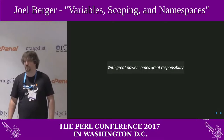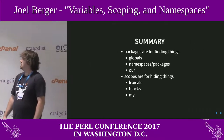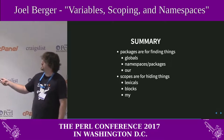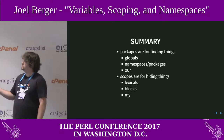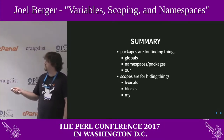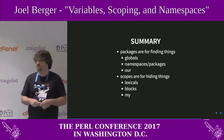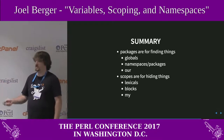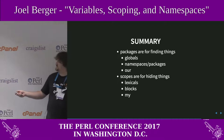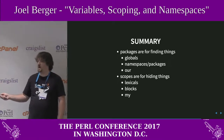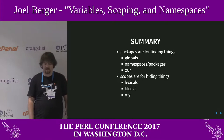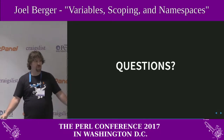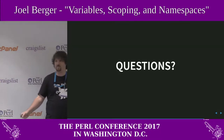So in summary: packages are for finding things. Packages set global variables — we can control them with namespaces and the `package` keyword, and refer to them with `our`, which builds a lexical alias, or the fully qualified name. Scopes are for hiding things — they have a lexical scope, they're bound to blocks, and we declare them with `my`. At this point I'll take some questions.